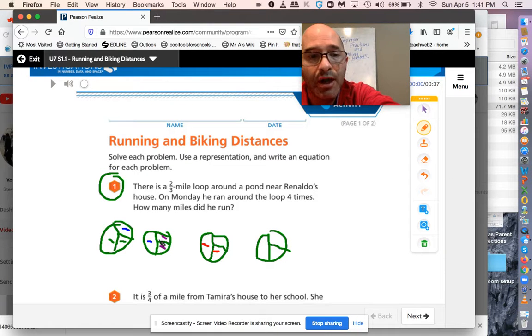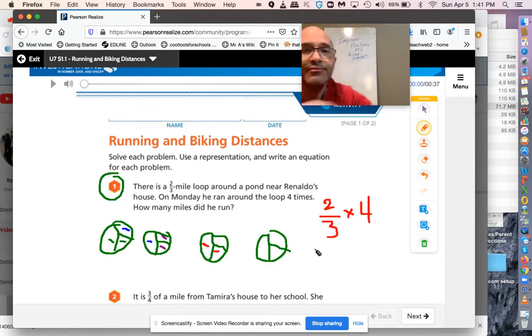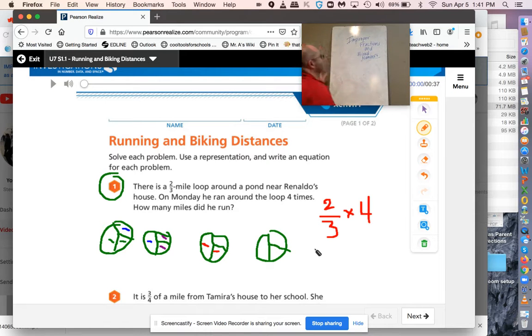You could also say two-thirds four times, right? Times four, which we know is the same as repeated addition. It'll just be easier if I use this whiteboard. Hopefully you can see it. So we got two-thirds times four, right? Which is the same as two-thirds, plus two-thirds, plus two-thirds, plus two-thirds. It's just repeated addition, right? Multiplication and repeated addition are the same thing. The denominator is the same, so it remains the same when you add with common denominators.